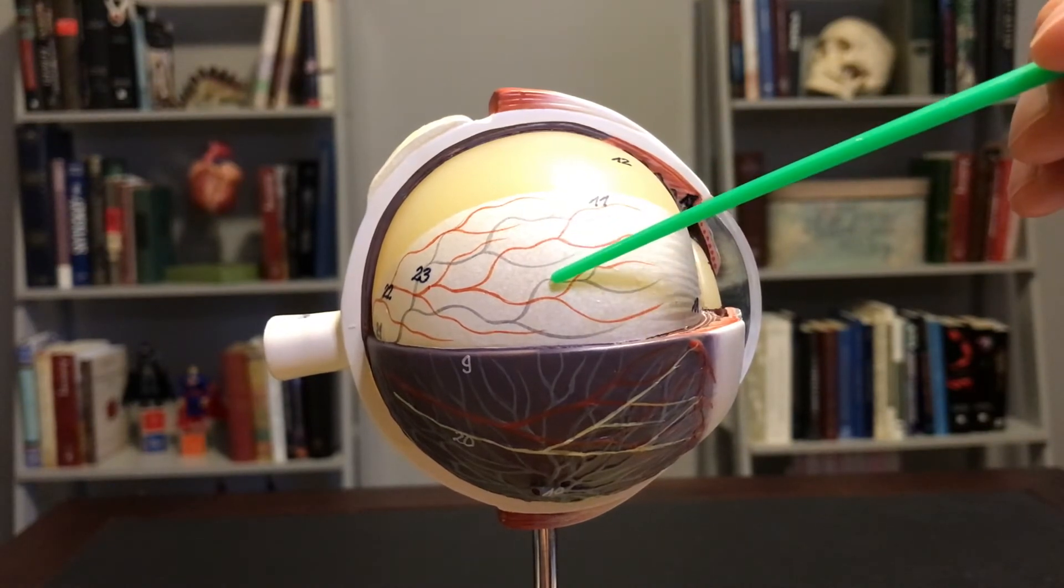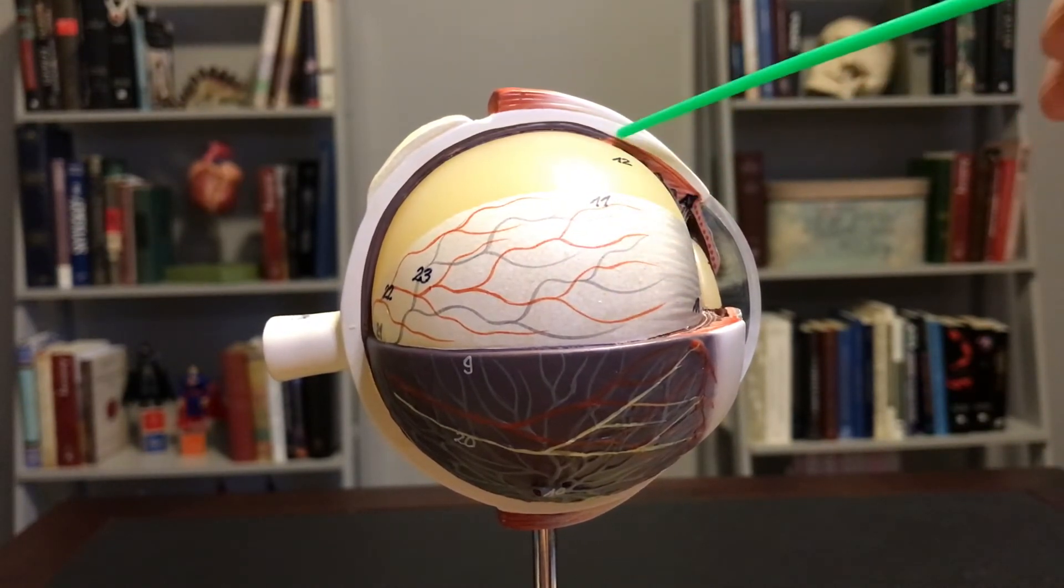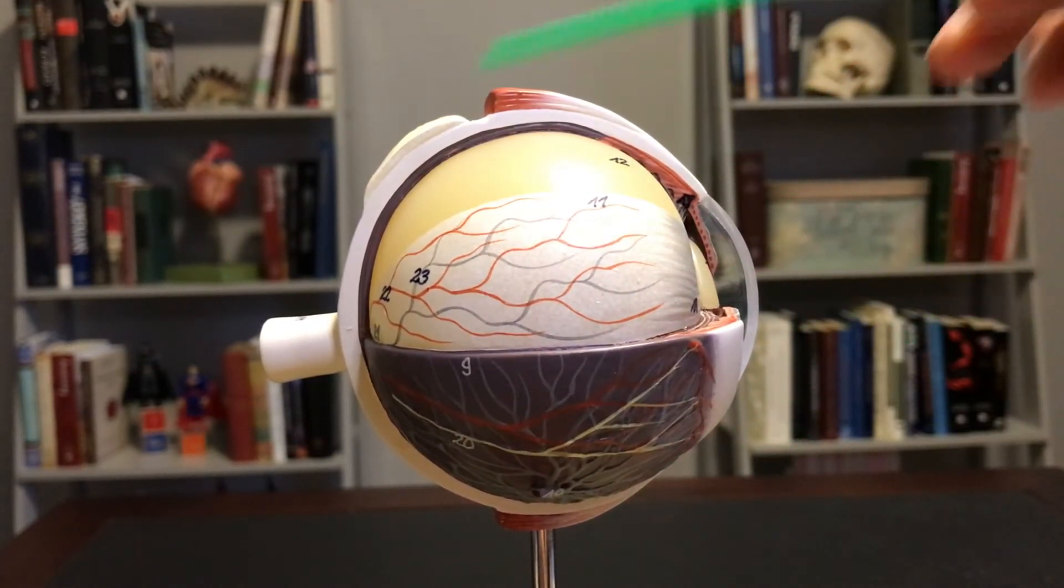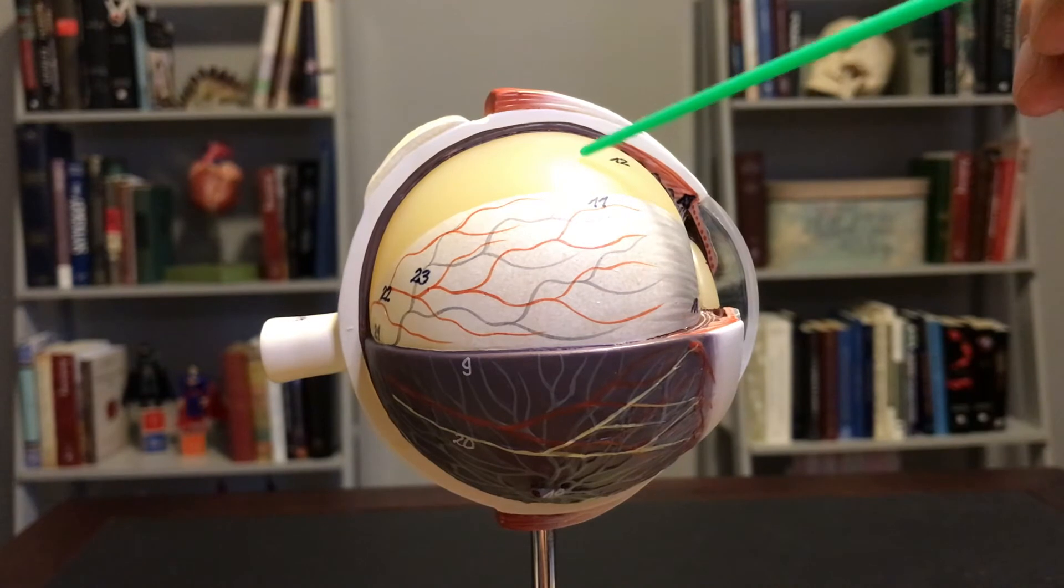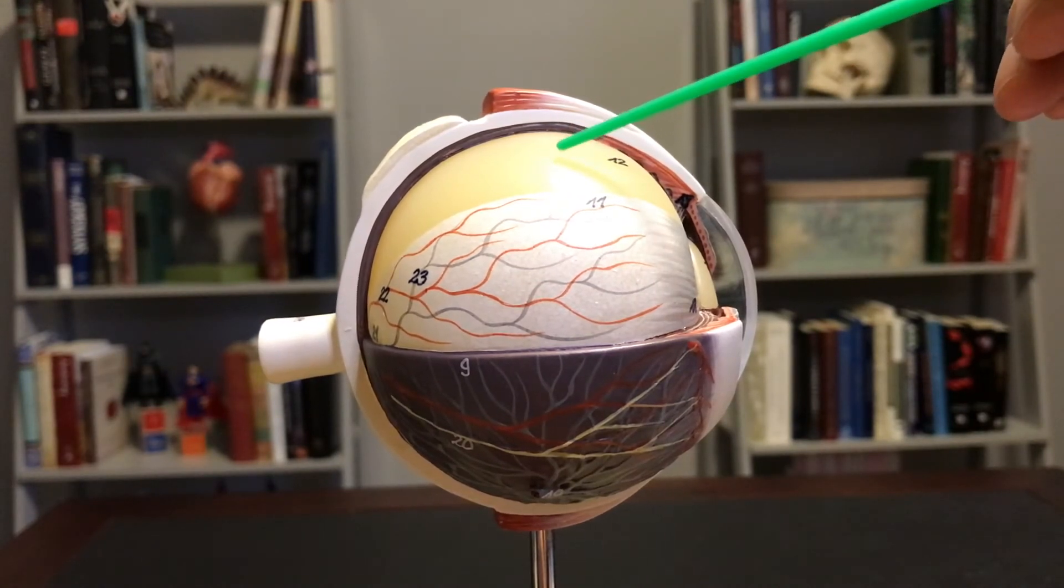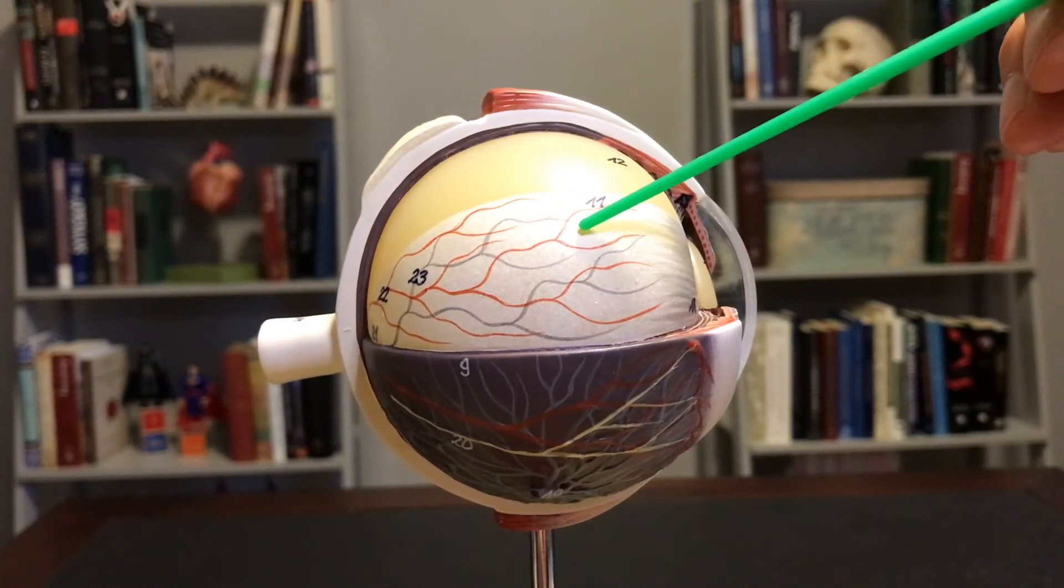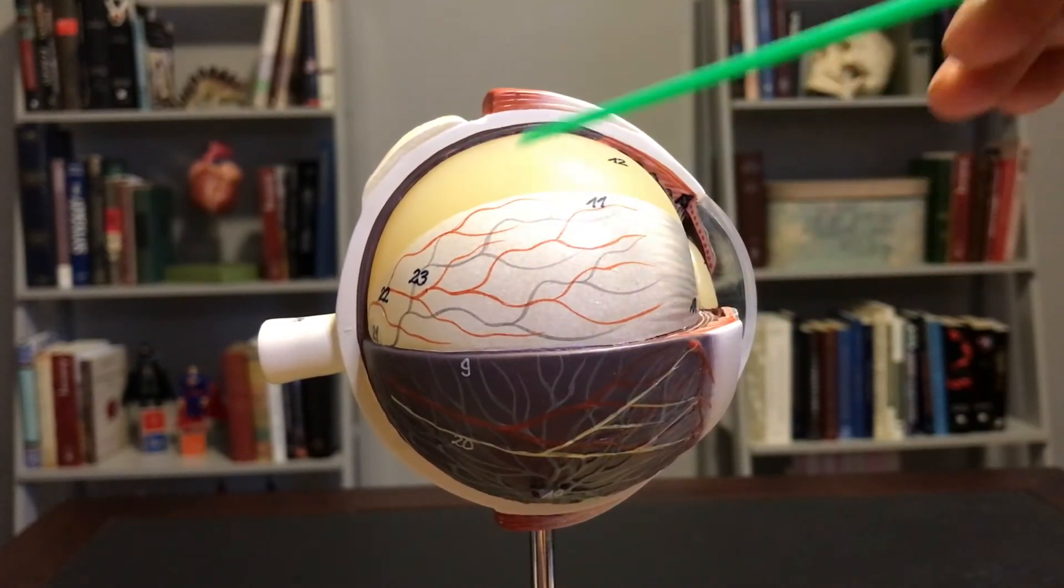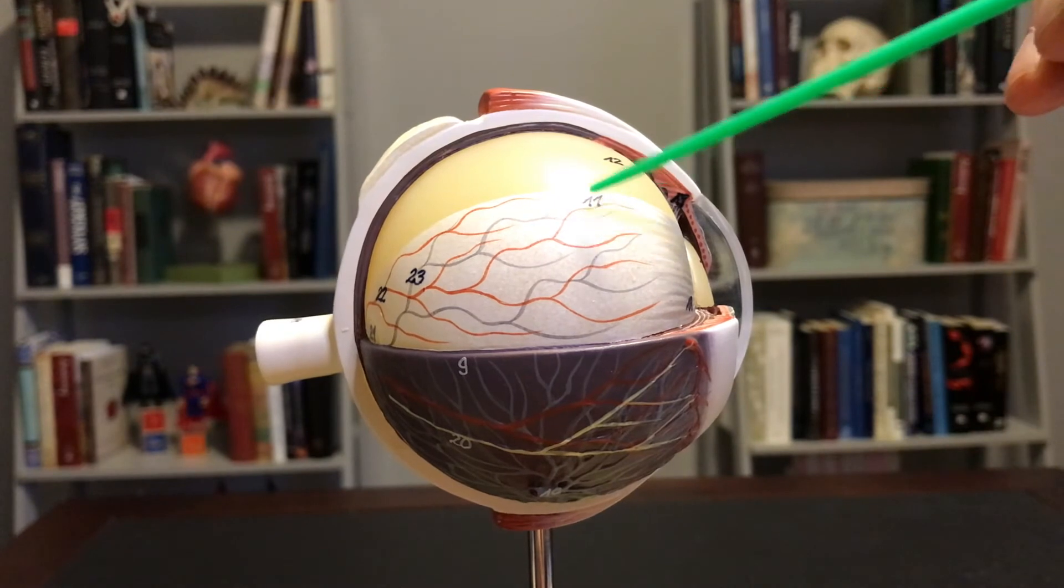And the retina is pushed out to give this eye its sort of globular or globe-like shape because of the vitreous humor. The vitreous humor is sort of that jelly-like substance that pushes the retina out and leads it to be that inside layer on the eye.